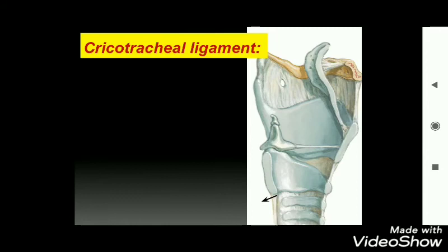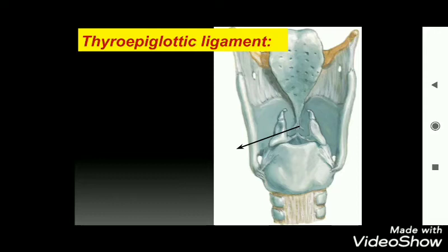The cricotracheal ligament connects the lower part of the cricoid cartilage to the first tracheal ring. The thyroepiglottic ligament connects the stalk of the epiglottis — its lower end — to the internal surface of the thyroid laminae. The hyoepiglottic ligament connects the anterior surface of the epiglottis to the body of the hyoid bone.